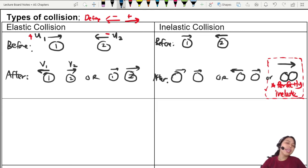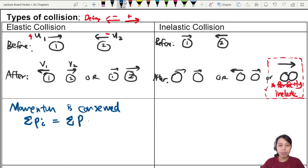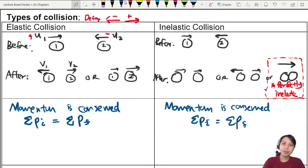But in all the cases you can draw, if there is no external force, we say whether elastic or inelastic, whether collide stick together, fly apart, fly together, all these momentum is conserved. In other words, the total momentum before collision is equal to the total momentum after collision. And it's the same for either type of collision.